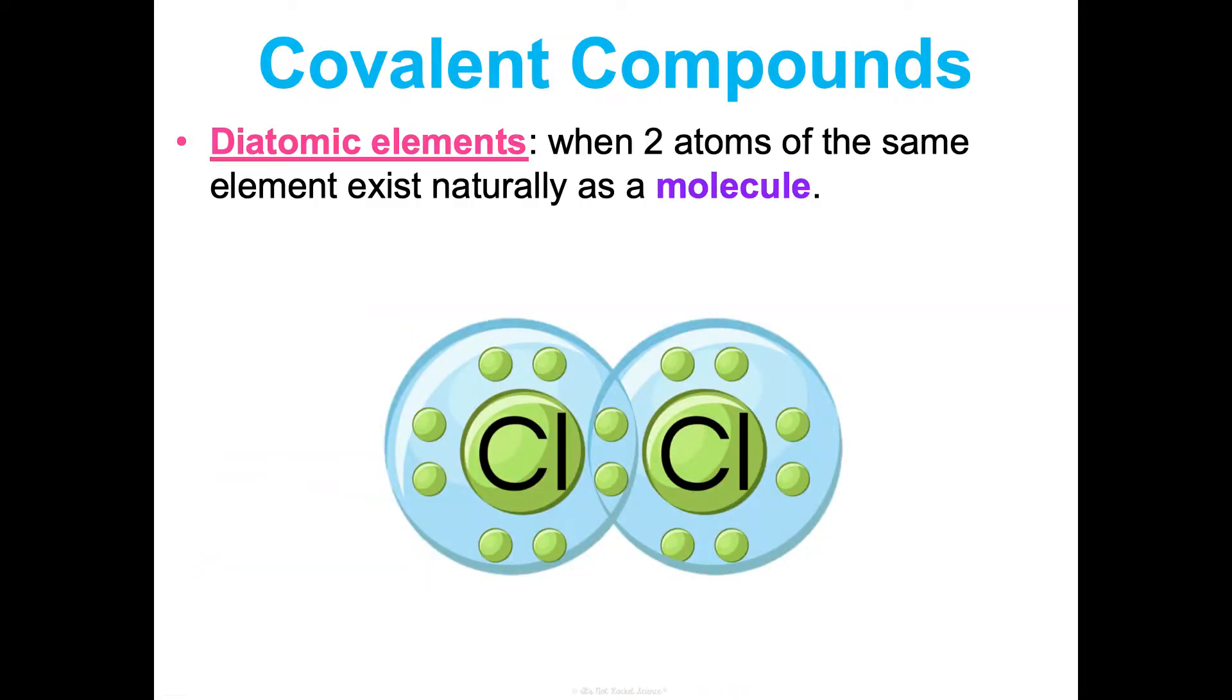A term to know with covalent compounds is diatomic elements. This is when two atoms of the same element exist naturally as a molecule. So the ones that you'll need to know would be hydrogen, nitrogen, oxygen, fluorine, chlorine, bromine, and iodine. They don't exist on their own. Like when you're inhaling oxygen right now, you're inhaling O2. You're not just inhaling O. So they exist like this. And because it's two of the same bonded together, these are always forming nonpolar covalent bonds. They're equally sharing those electrons.